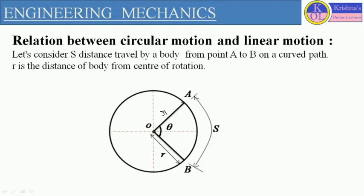Let us consider one particle placed at position A — A is the initial position. From this position, the particle starts motion along the circular path in the clockwise direction, moving from initial position A to reach final position B in a particular time T. The center is the same, and the distances OA and OB are equal, so this defines circular motion.